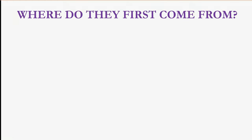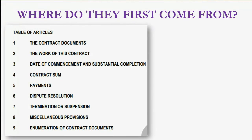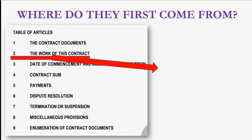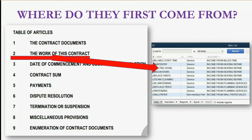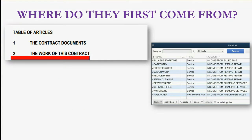How do you decide what items to put on the estimate or invoice? Usually they come from a contract. A written contract with a contractor for work to be done over several months usually has several articles and many pages. The most important section for purposes of this video is the section called "work of this contract" — that's really where you decide which items from your items list to put on the estimate and invoice, and to bill in partial phases for progress invoicing.